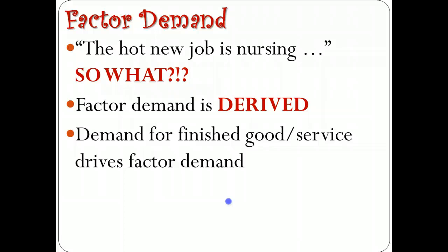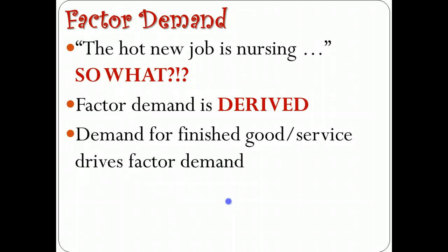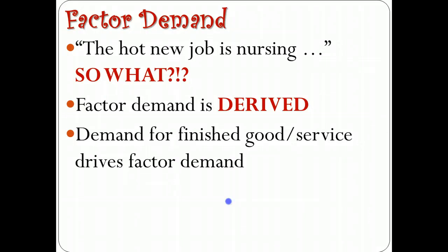The demand for factors is what we call a derived demand. For example, nursing is a hot new job in the working world. Why is there a large demand for nurses? Because the demand for nurses is derived from the demand for the good or service. There's more need for nurses because people are living longer, getting older, and needing medical care. Because there's a greater need for the service, there becomes a greater need for the people who provide it. Once we know the factor price, we can determine what the demand curve looks like for nurses.